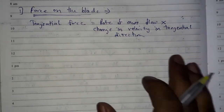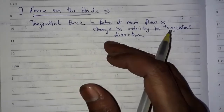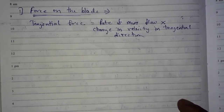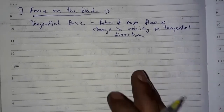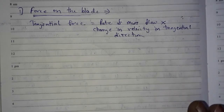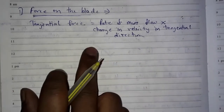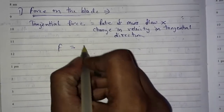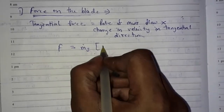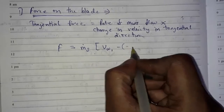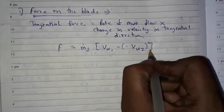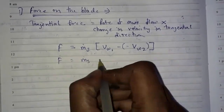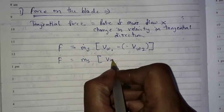If you want to learn about simple impulse turbine and its velocity vector diagram and combined velocity diagram, please watch my previous video — the link is given in the description section. Continuing: tangential force F is equal to m-dot-s into (Vw1 plus Vw2).